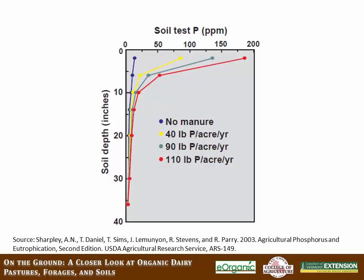Phosphorus is more readily available between 65 and 105 degrees, so temperature does have an impact. Overall, phosphorus isn't that mobile. Most of your phosphorus stays in the top six inches of the soil, and the lower down you get into the soil profile, the less phosphorus you have.